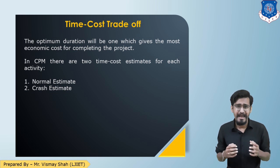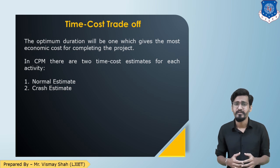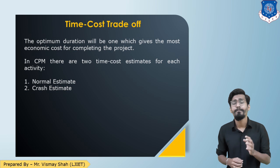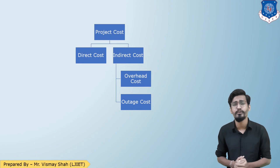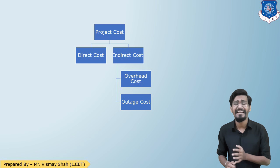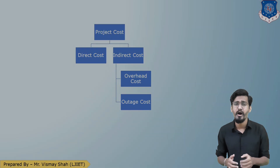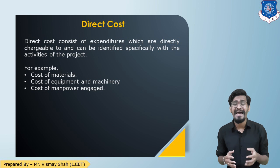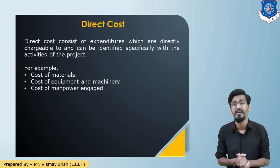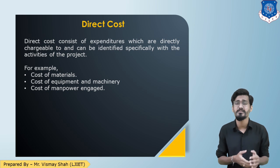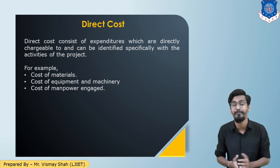Let us understand the project cost. The project cost can be divided into two types: direct cost and indirect cost. Indirect cost can be further divided into overhead charges and outage charges. The direct costs are the expenses which can be directly associated with the construction activities, such as cost of materials, cost of labor, cost of plant and machinery, etc.